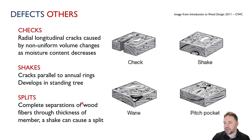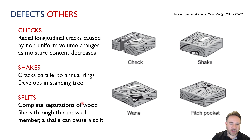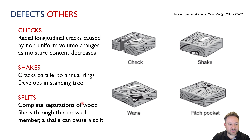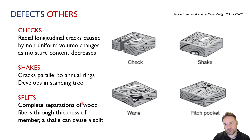A check is a radial longitudinal crack caused by moisture content changes. This happens because the radial and tangential shrinkage are not the same — since tangential shrinkage is greater than radial shrinkage, that can form cracks in the piece of wood.